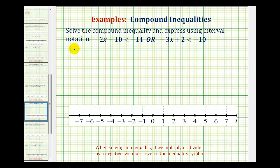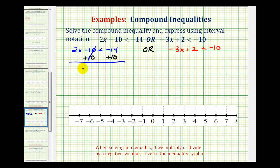So we'll first solve the inequality 2x minus 10 is less than negative 14. And then we'll solve the inequality negative 3x plus 2 is less than negative 10. So to isolate x on the left side here, we'll start by adding 10 to both sides of the inequality. This should be zero, so we have 2x is less than, this would be negative 4,